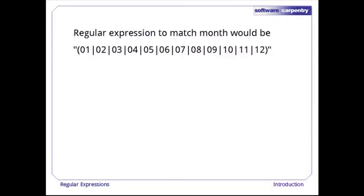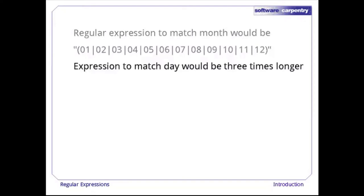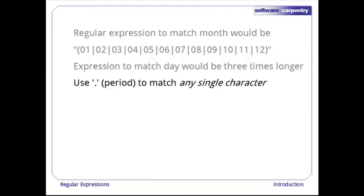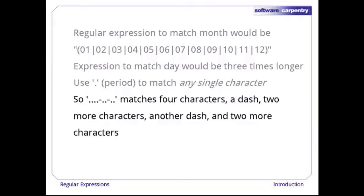What if we want to match the month as well as the year? A regular expression to match legal months would be '01|02|03|...' all the way up to 12. The expression for the day would be three times longer — pretty cumbersome. In a regular expression, you can use dot — the period character — to match any single character. So '....-..-..'' matches any four characters, followed by a dash, two more characters, another dash, and two more characters.